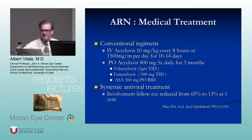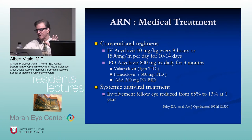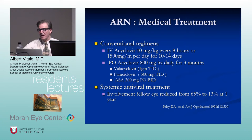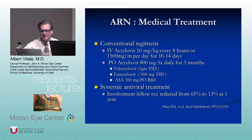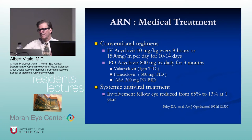Conventional regimen: IV acyclovir 10 mg/kg every eight hours or 1,500 mg/m². After 10-14 days, transition to oral antiviral medication — acyclovir or equivalent. Many clinicians add aspirin to help prevent the occlusive vasculitis. The involvement of the fellow eye is a major problem but can be reduced significantly by treating with antiviral therapy after high-dose acyclovir. I keep patients on antivirals almost indefinitely, particularly if they have a bad outcome in the fellow eye.